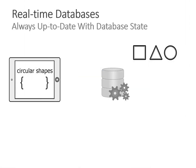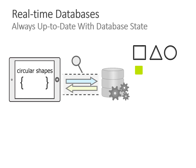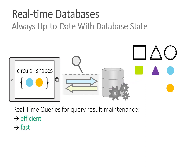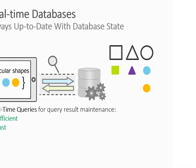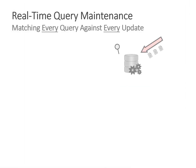What you actually want is a real-time database as a storage backend. The application doesn't just fire a query initially but establishes a persistent connection, so the database knows what query to keep up to date. Whenever something relevant to the query results — namely circular shapes — occurs, the database transmits them immediately and without delay, making it efficient by not transmitting the same data twice and fast because updates are transmitted immediately.